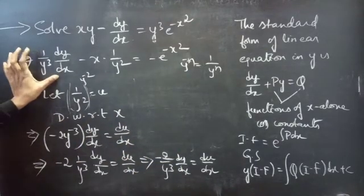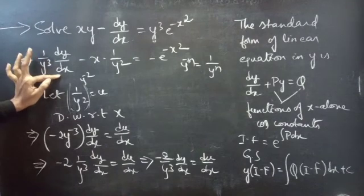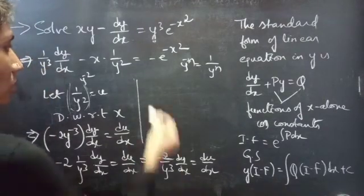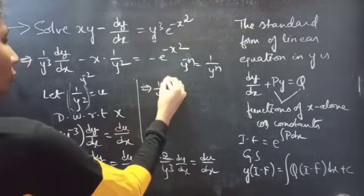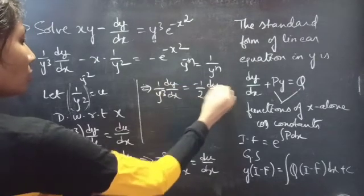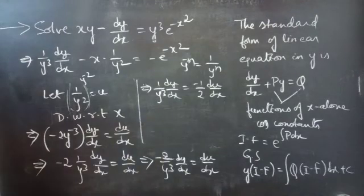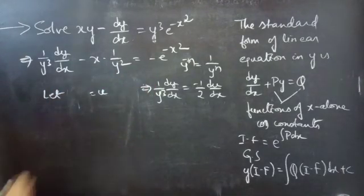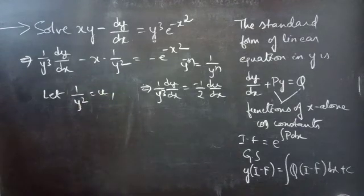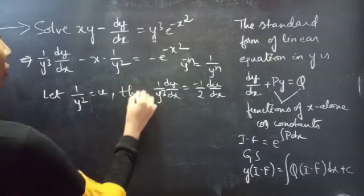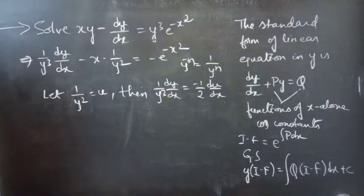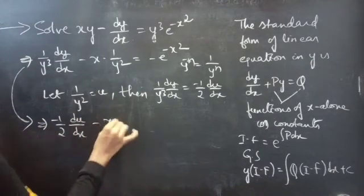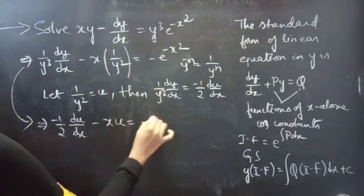Coming to the first term: we have (1/y³)·(dy/dx) which equals (−1/2)·(du/dx). The equation becomes: (−1/2)·(du/dx) minus x·u equals minus e^(−x²), where we replaced 1/y² with u.